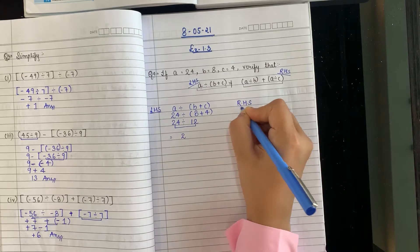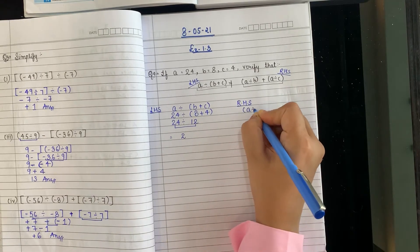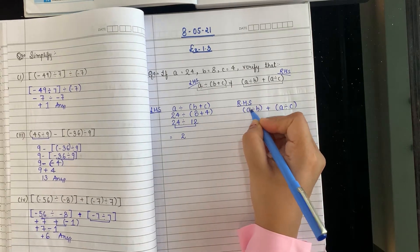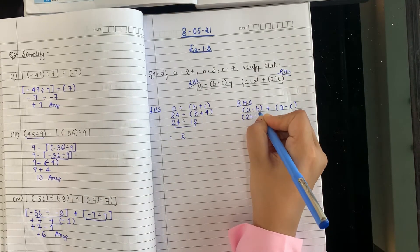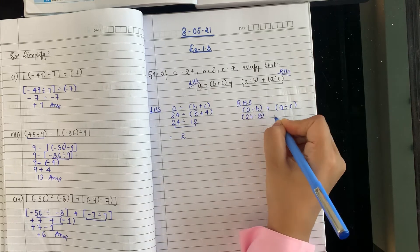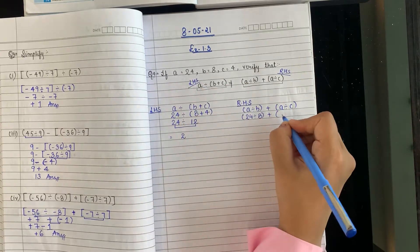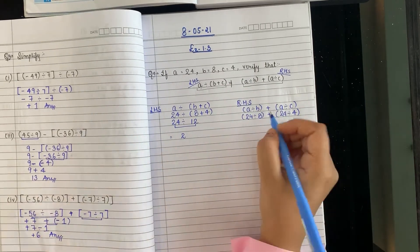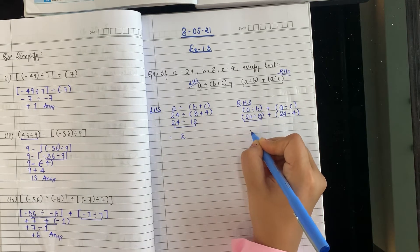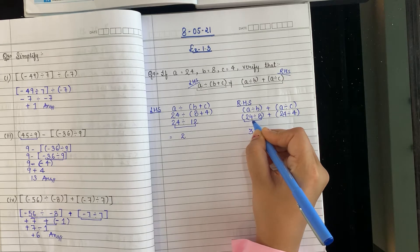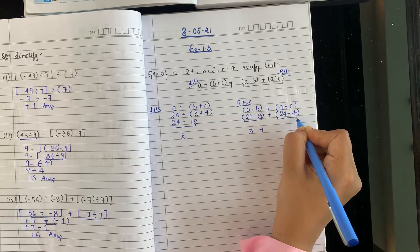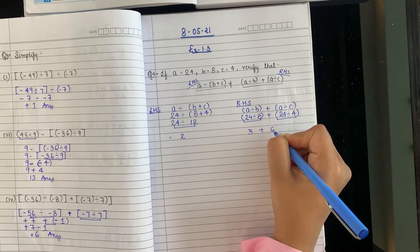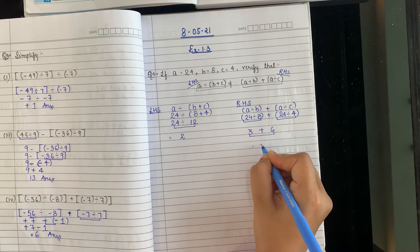Now let us solve the right-hand side, which is a ÷ b + a ÷ c. Putting in the values: 24 ÷ 8 + 24 ÷ 4. Solving the first bracket: 24 ÷ 8 = 3. Solving the second bracket: 24 ÷ 4 = 6. Now the last step: 3 + 6 = 9. The right-hand side answer is 9.